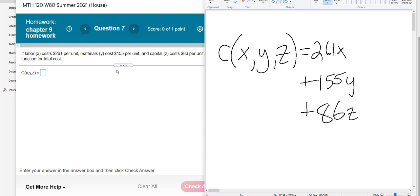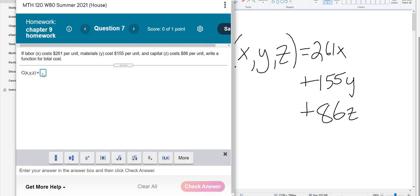and capital $86 for every unit. So labor, materials, and capital. There's your equation right there. So they don't ask us to do anything with it yet. They just ask us to come up with the formula for cost based on more than one variable.